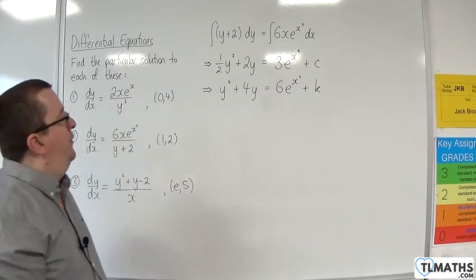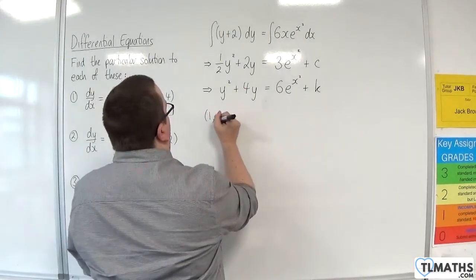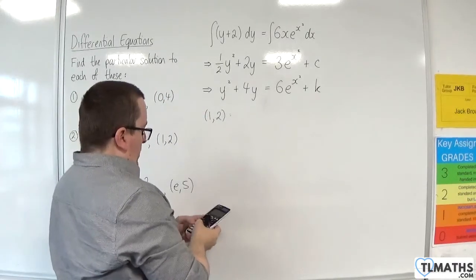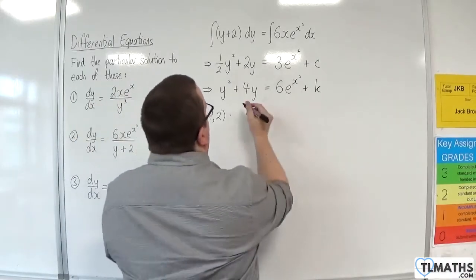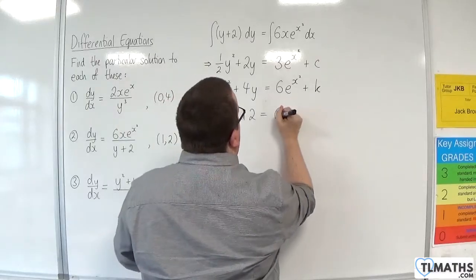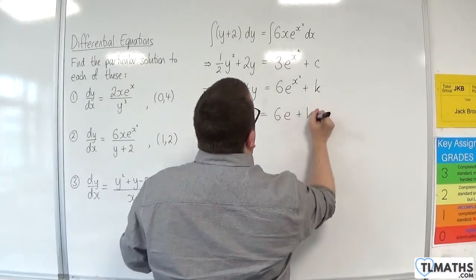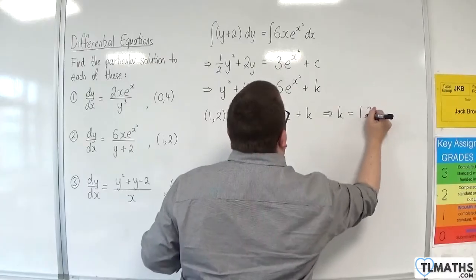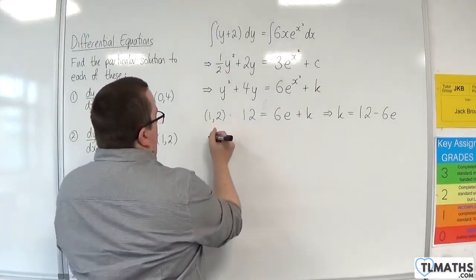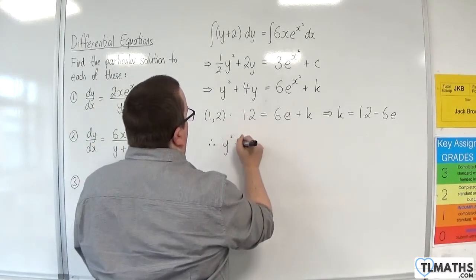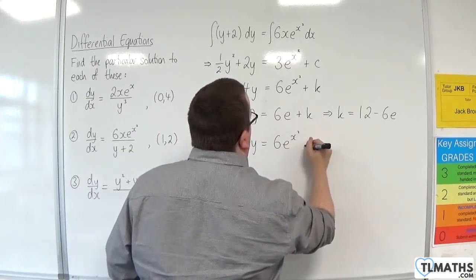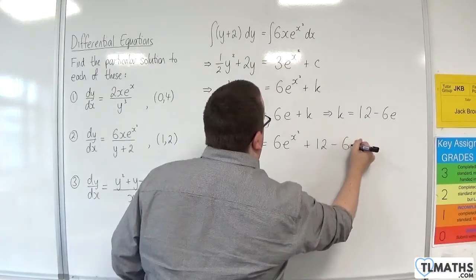Now I'm going to substitute in (1, 2). On the left-hand side, we've got 2 squared plus 4 times 2, so 12. On the right-hand side, substituting in x=1, we're going to get 6e plus k. So k is going to be 12 take away 6e. And then we'll have y squared plus 4y is equal to 6e to the x squared plus 12, take away 6e.